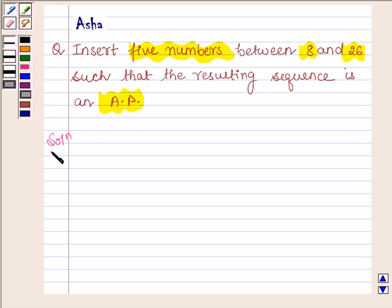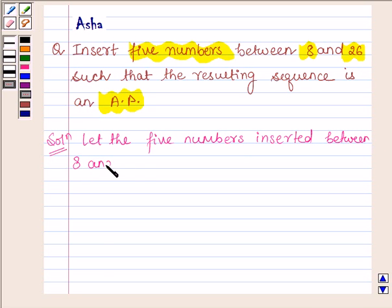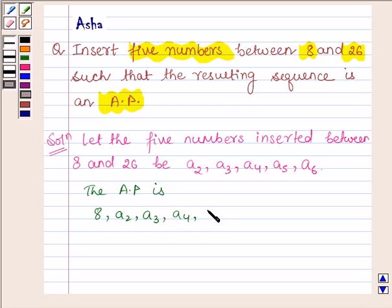So let's start with the solution. Let the 5 numbers inserted between 8 and 26 be A2, A3, A4, A5, and A6. So the AP which is formed is 8, A2, A3, A4, A5, A6, and 26.